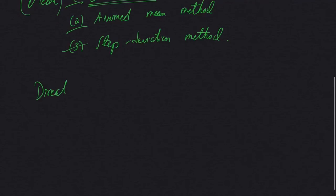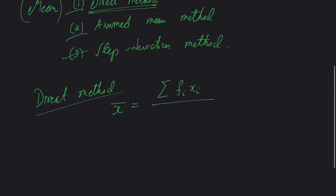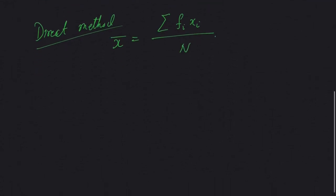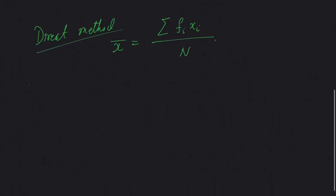Now what was the formula for finding out the mean using direct method? The formula was: X bar will be equal to the total of the frequency and its product with the entries, divided by the total number of frequency.